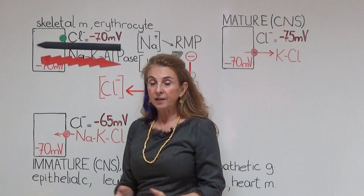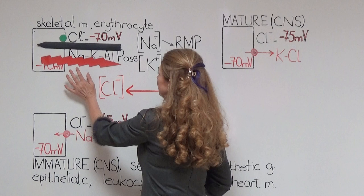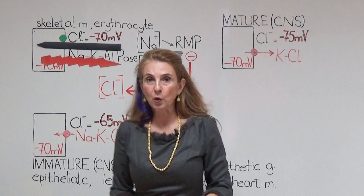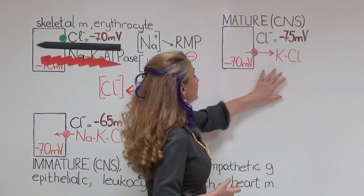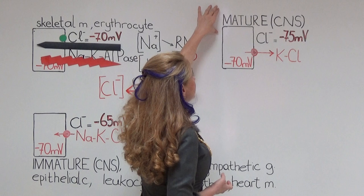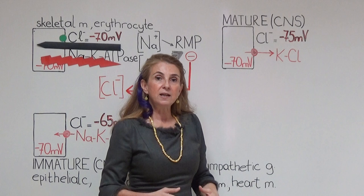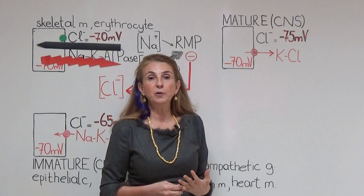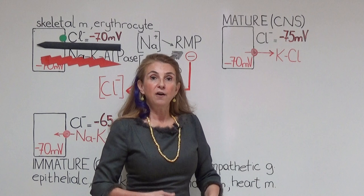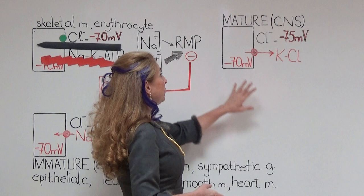So in this first group of cells, the resting membrane potential produces the chloride concentration difference, and if ligand-gated chloride channels open, no local potential is going to be produced. Moving on to the second group of cells — these are especially the mature cells in the central nervous system. When we say mature cells, we know that when we are born, the central nervous system has not completed its maturation. This is why a newborn baby cannot sit, walk, or talk. Even after birth, the central nervous system continues its maturation.